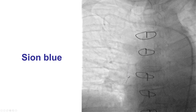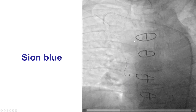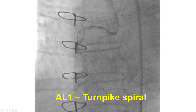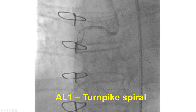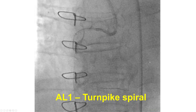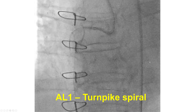We then used a Sion Blue workhorse guidewire, but had significant difficulty advancing it through that lesion. In the process, the patient developed significant inferior ST-segment elevation — a highly concerning warning sign. We stopped and the STs returned to baseline. We decided not to persist in treating the RIMA anastomosis and instead switched to the native right coronary artery.